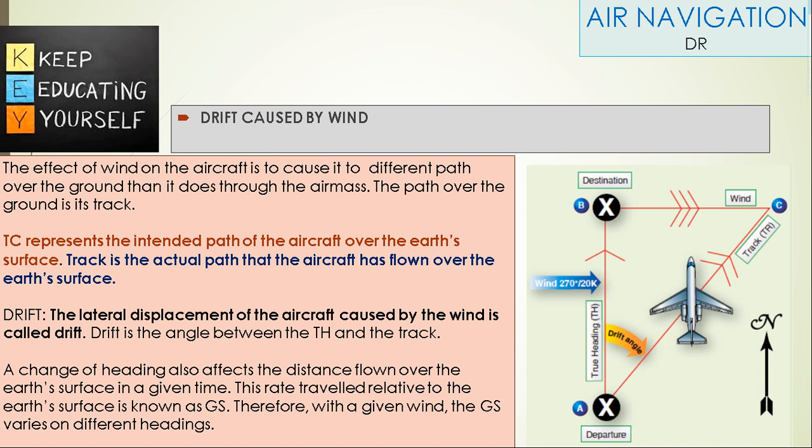Drift: The lateral displacement of the aircraft caused by the wind is called drift. Drift is the angle between the true heading and the track. A change of heading also affects the distance flown over the earth's surface in a given time. This rate of travel relative to the earth's surface is known as ground speed. Therefore, with a given wind, the ground speed varies on different headings.